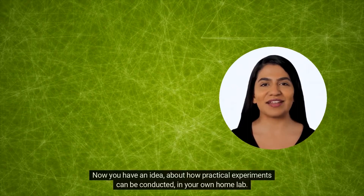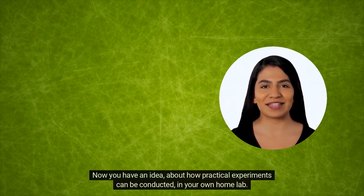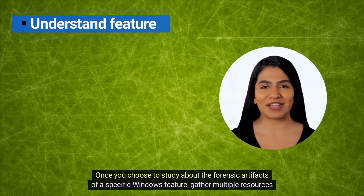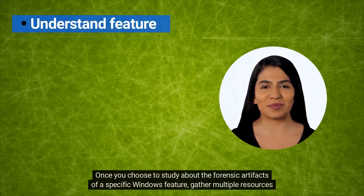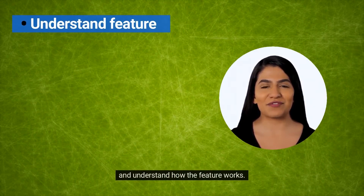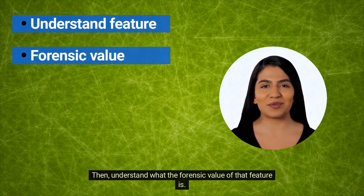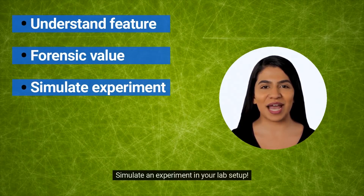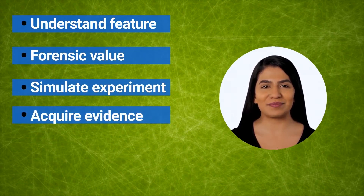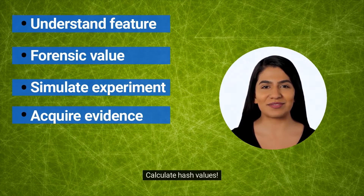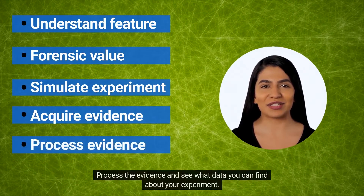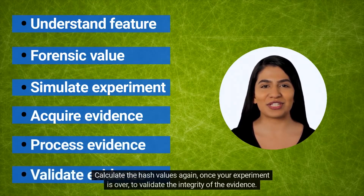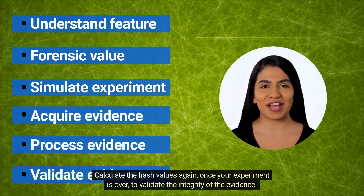Now you have an idea about how practical experiments can be conducted in your own home lab. Once you choose to study the forensic artifacts of a specific Windows feature, gather multiple resources and understand how the feature works. Then understand what the forensic value of that feature is. Simulate an experiment in your lab setup, acquire the evidence, calculate hash values, process the evidence, and see what data you can find. Calculate the hash values again once your experiment is over to validate the integrity of the evidence.